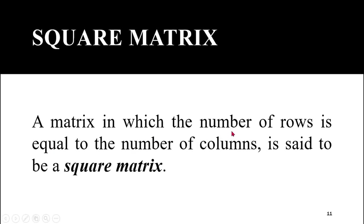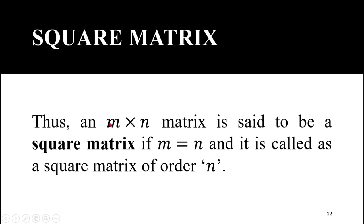Square matrix: a matrix in which the number of rows is equal to the number of columns is called a square matrix. Thus, in an m×n matrix, if it is a square matrix, then m must be equal to n. An m×n matrix is said to be a square matrix if m = n, and since m and n are equal, its order can be denoted by just the single number n. So it is called a square matrix of order n — instead of n×n, you can say the order is simply n.